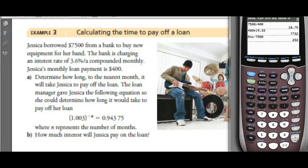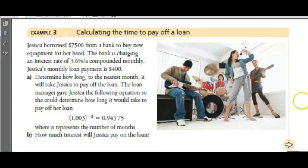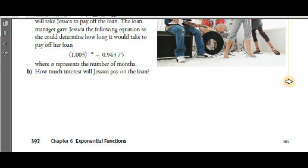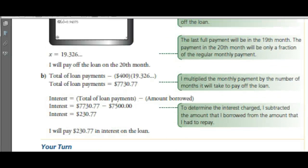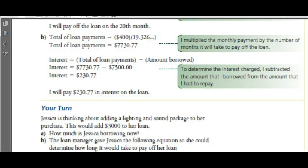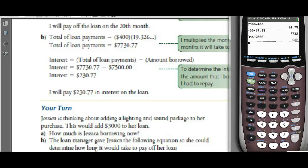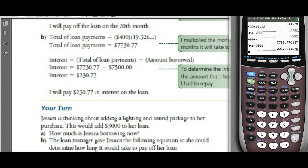How much interest will Jessica pay on the loan? Using the stored X value in the calculator: $400 times X minus $7,500 — the amount she borrowed — gives $230.77. So she will pay $230.77 in interest.